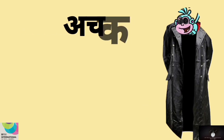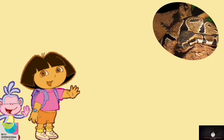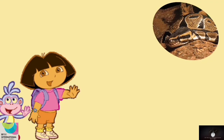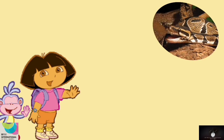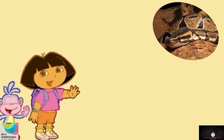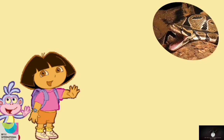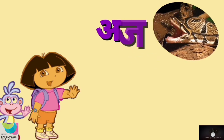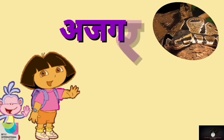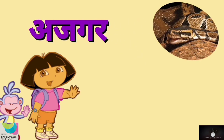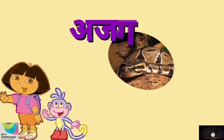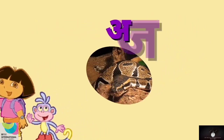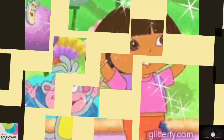Oh Bhuji, calm down, let's go. Dora, look — there is a python. Do you know the Hindi word for python? Yes — Ajgar. A — Ja — Ga — Ra — Ajgar. Ajgar. Oh Bhuji, run!